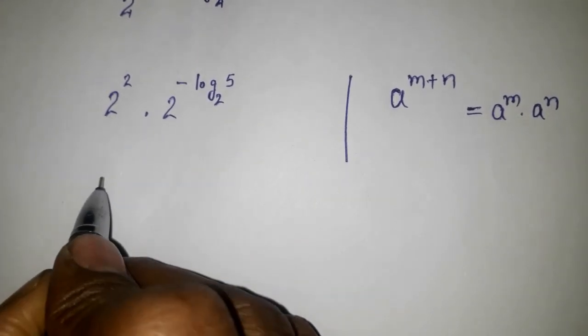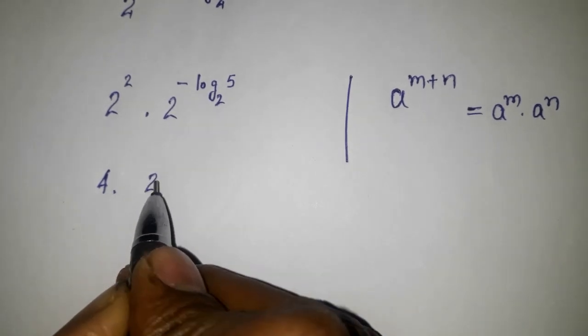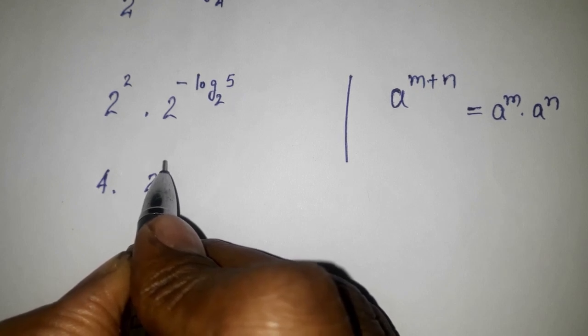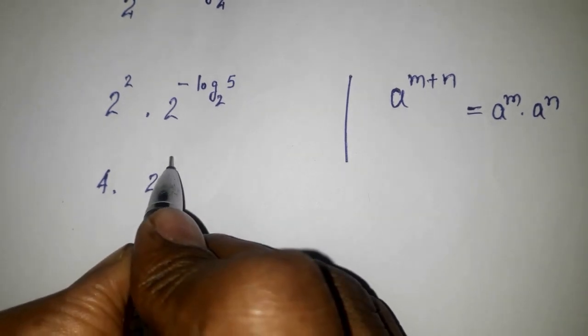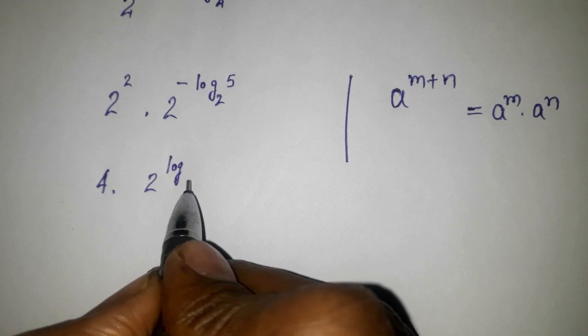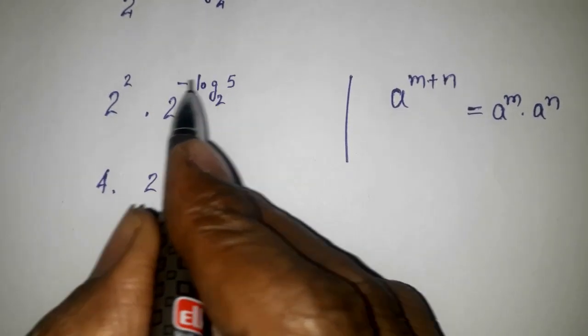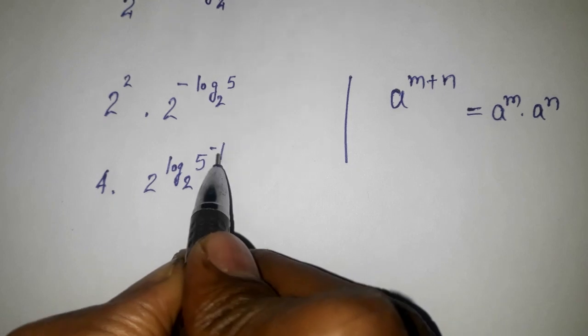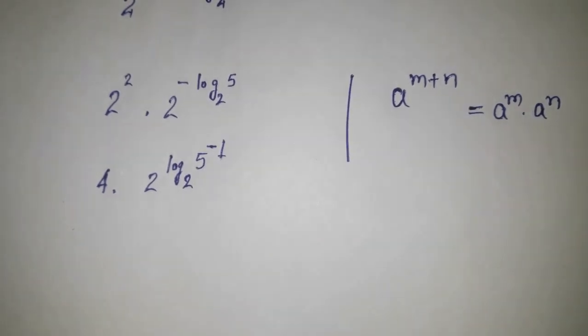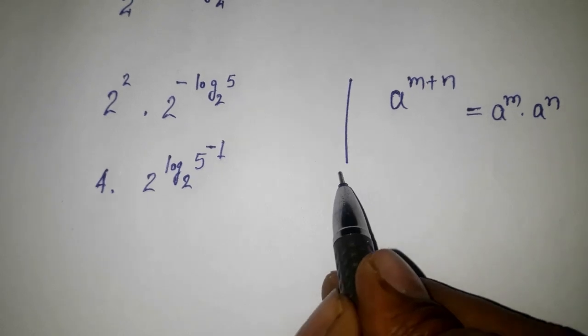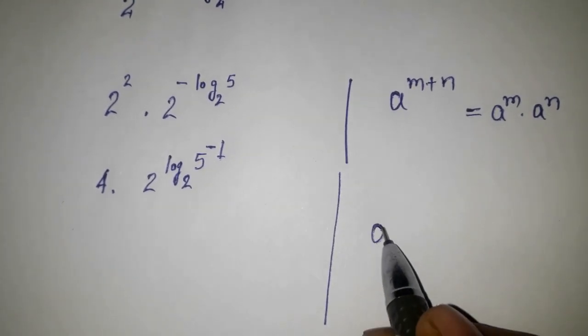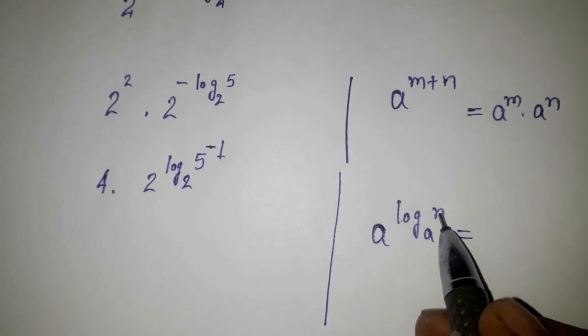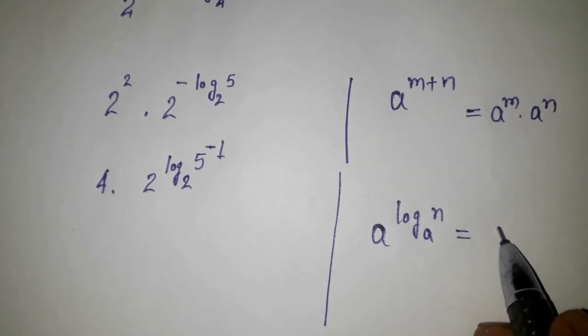Now it is becoming 4, and here we have 2 to the power, and this can be written as log 2, and this minus 1. Minus 1 is coming on the head of 5 as power, because we have this identity a log a of m equals m. So n will come here and a will be here in this way.